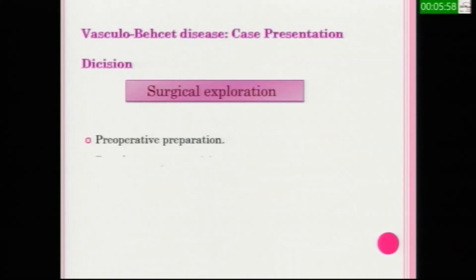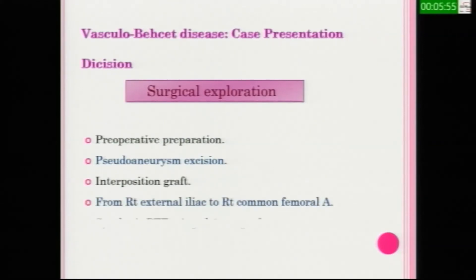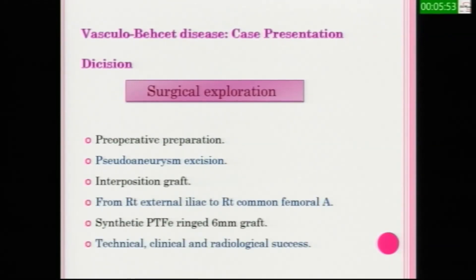The decision was surgical exploration. With preoperative preparation, pseudoaneurysm excision and interposition graft with a synthetic PTFE ring 6 mm from right external iliac to right common femoral was performed, with technical, clinical, and radiological success. This shows the anastomosis with the external iliac, the anastomosis with the right common femoral, and the net result.